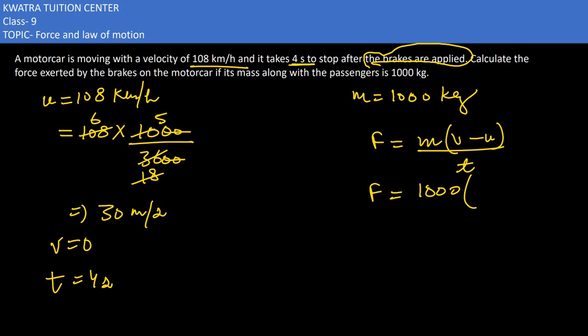So m in this case is 1000, v in this case is 0, u in this case is 108, and divided by time which is 4. So you get 1000 times minus 108 divided by 4.